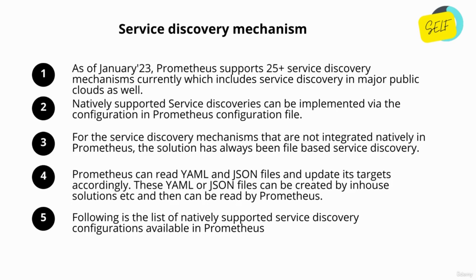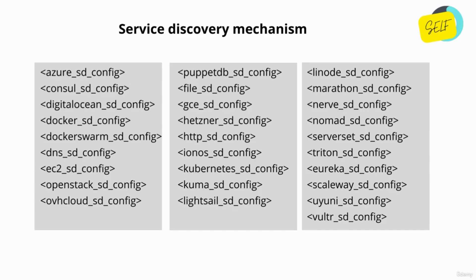Following is the list of natively supported service discovery configurations available in Prometheus. You can see all the configurations available for service discovery. You might notice that the string underscore sd underscore is common in all these configurations, which represents service discovery. Here you can see azure_sd_config, consul, GCE, HTTP, EC2 sd_config, OpenStack — there are around 25 plus service discoveries currently available. You can use this configuration to easily implement service discovery by providing the required attributes based on your target systems.